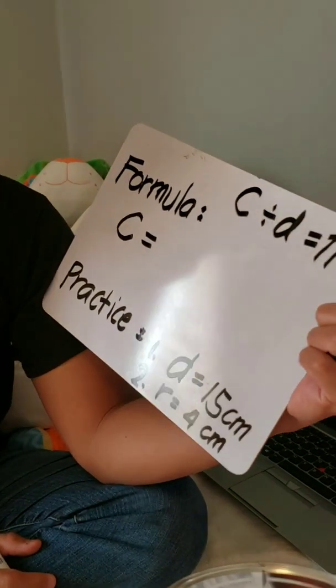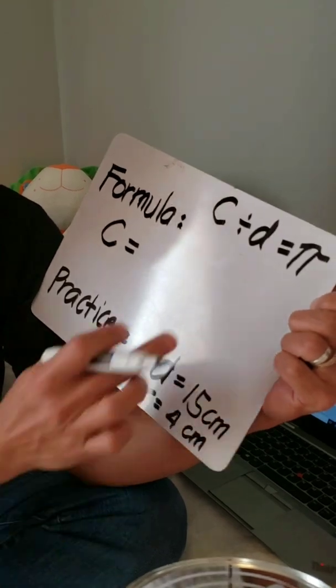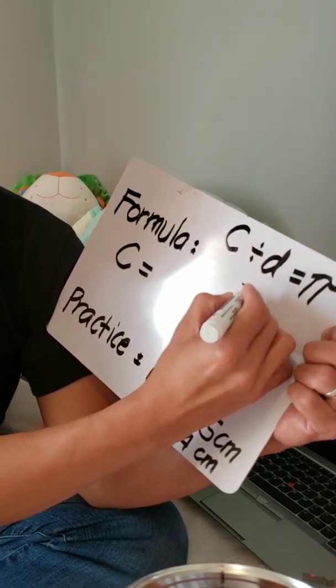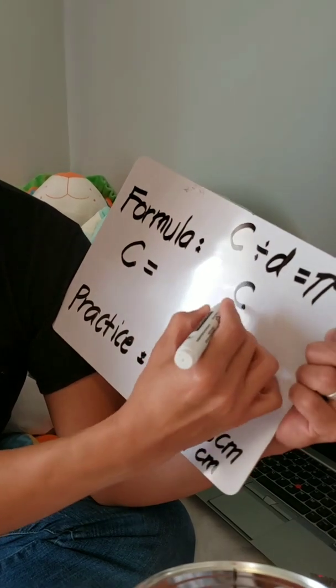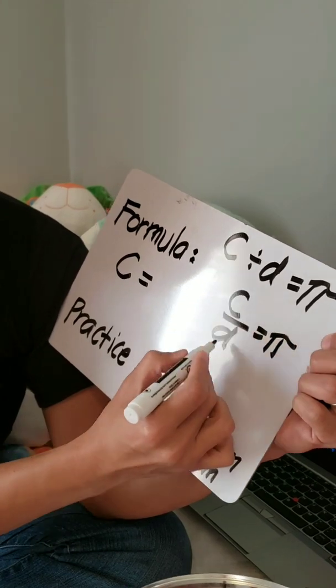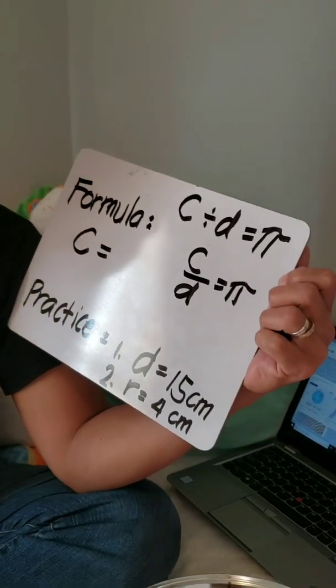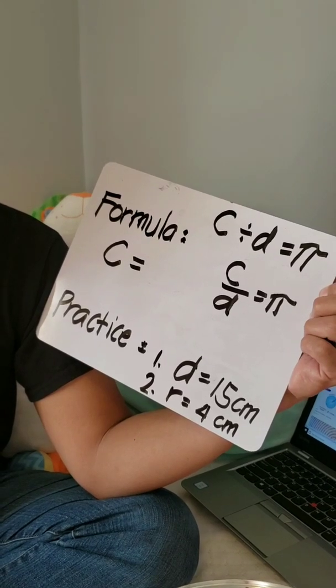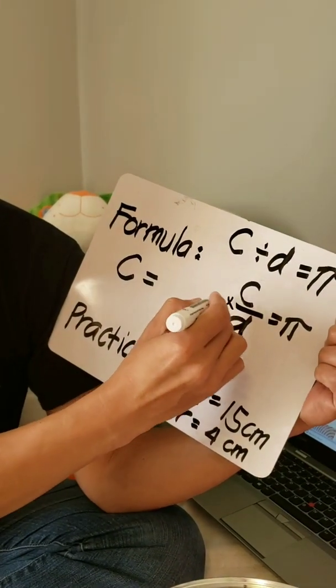We will say that circumference divided by diameter is pi. Now to get the circumference, let's write it like that. C divided by diameter is pi. So to derive for circumference, we can multiply both sides by diameter.